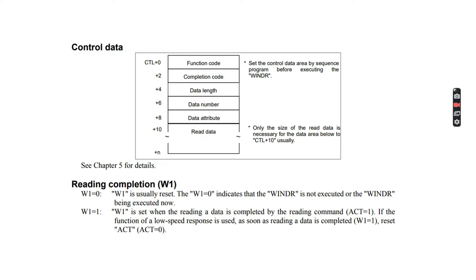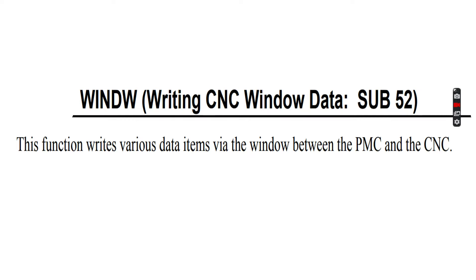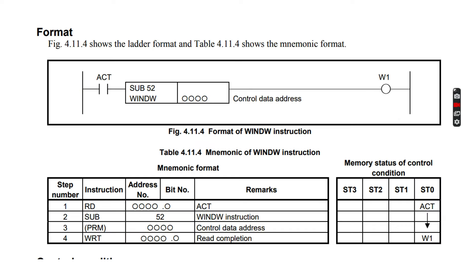Similarly, the Window Write function is used to write data from PMC to CNC. Sub 52 Window Write will be used and the format will be the same.